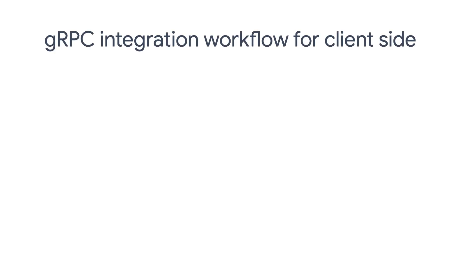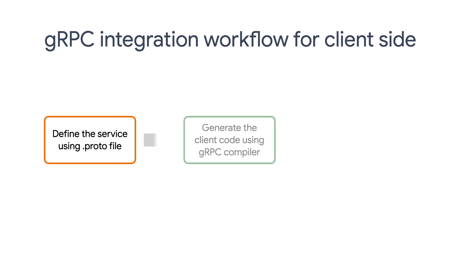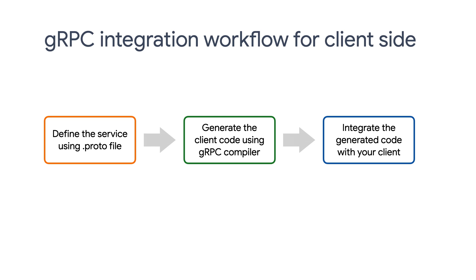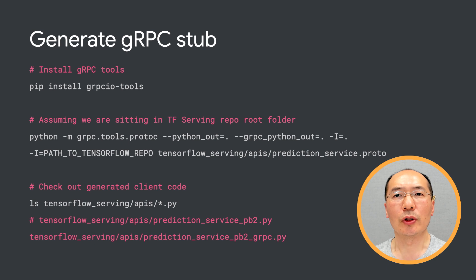In general, to use gRPC, we need to define the remote service using .proto files. Then we can use the gRPC compiler to generate the client stub code, which can then be integrated into your client. This workflow applies to any programming language that gRPC supports. This is how our prediction service .proto file looks like — it has dependencies on a number of other proto files, including some in TensorFlow repositories.